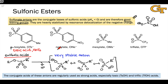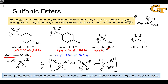Similarly, the conjugate acid of nosylate is called nosic acid, abbreviated HONs. The conjugate acid of mesolate is called mesic acid, abbreviated HOMs.